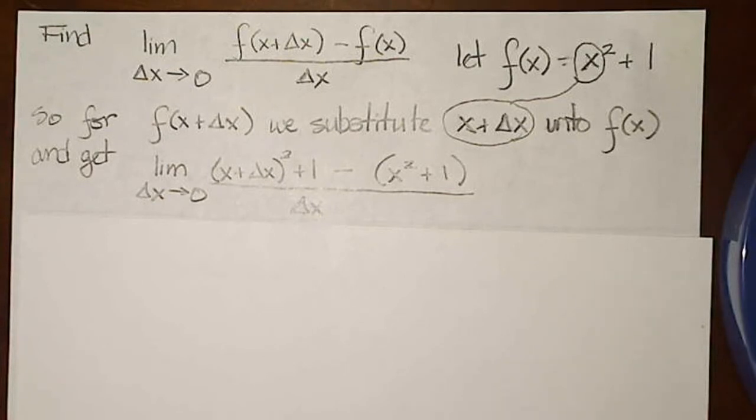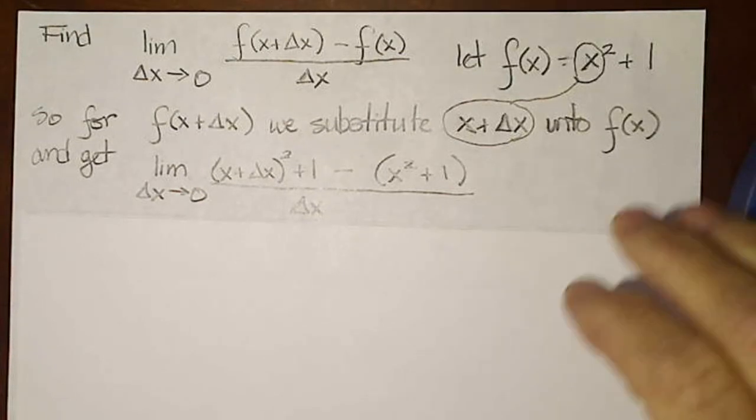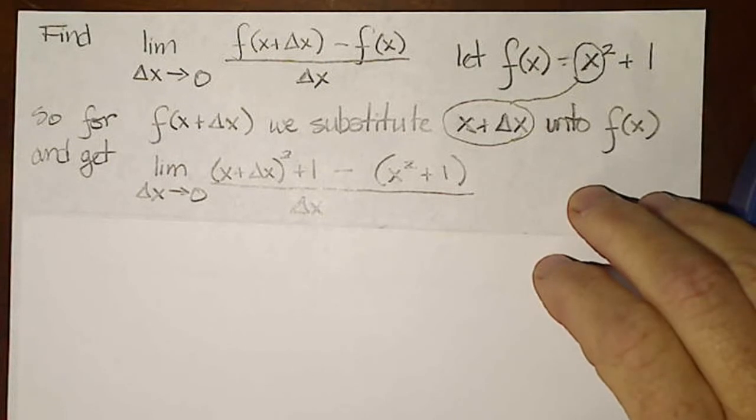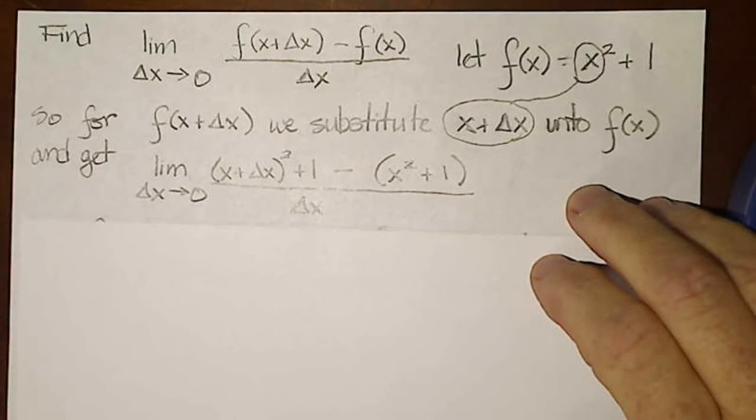So if I try direct substitution as is, I know I'm going to run into problems because the denominator goes to zero. Because this is a rational expression in the argument of the limit, we're going to try to use our algebra to reduce or eliminate that delta x in the denominator.